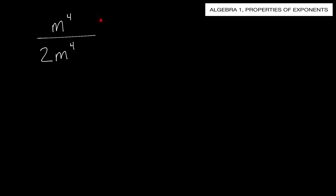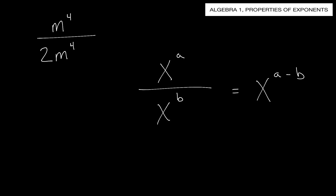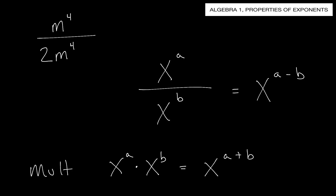Next problem: m to the fourth divided by 2m to the fourth. Here's another rule you need to know. If you have x to the a divided by x to the b, notice we have a similar base - base x - and this equals x to the a minus b. It's the exact opposite: for multiplication you add the exponents, for division you subtract the exponents. Those are the two key rules for solving these problems.